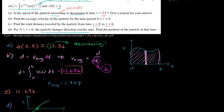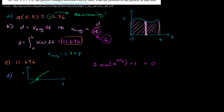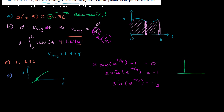The velocity function is 2 sine of e to the t over 4, plus 1, and we want to find when this equals zero in the interval from 0 to 6. Subtracting 1 from both sides: 2 sine of e to the t over 4 equals negative 1. Dividing by 2: sine of e to the t over 4 equals negative one-half. We can use a calculator or the unit circle, which I like to use.